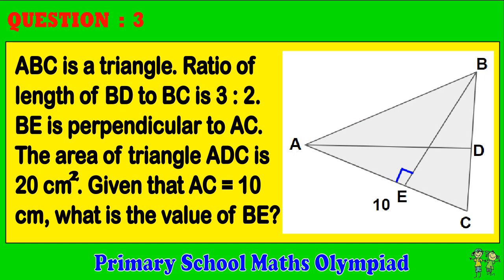Question 3. ABC is a triangle. Ratio of length of BD to BC is 3 to 2. BE is perpendicular to AC. The area of triangle ADC is 20 centimeters squared. Given that AC equals 10 centimeters, what is the value of BE?